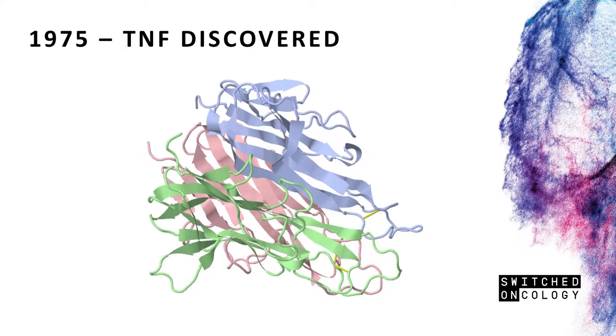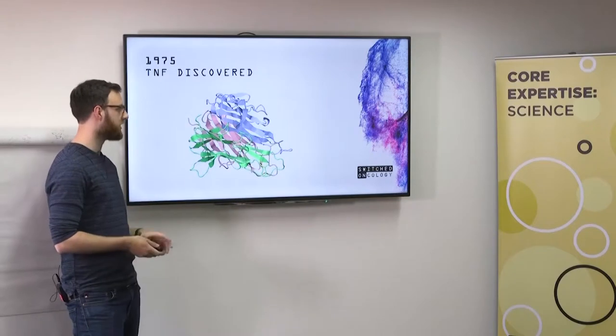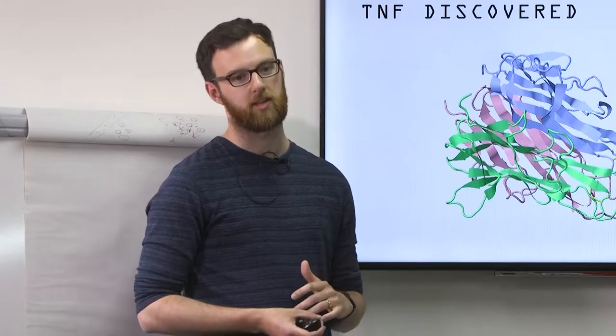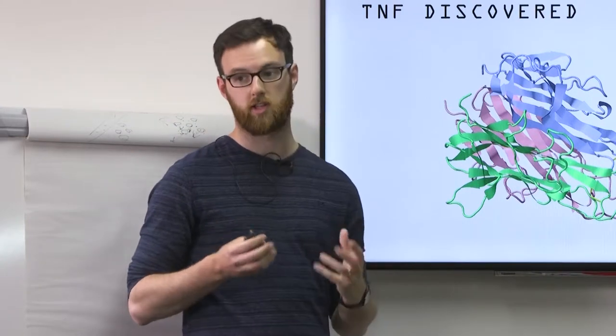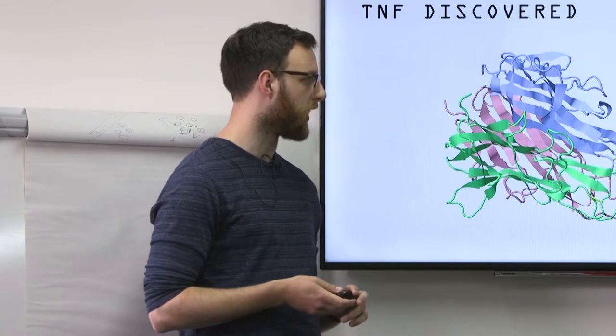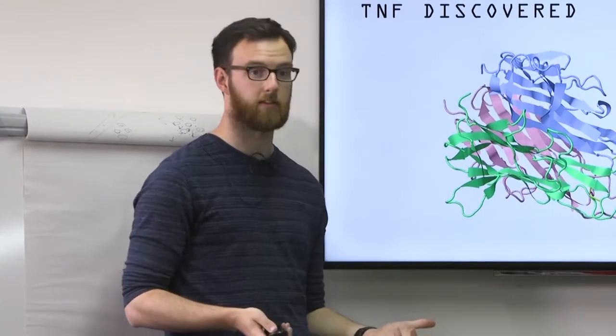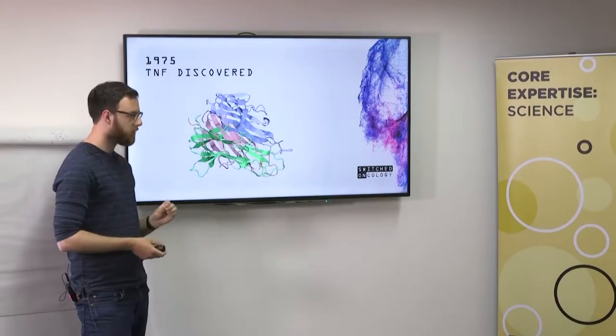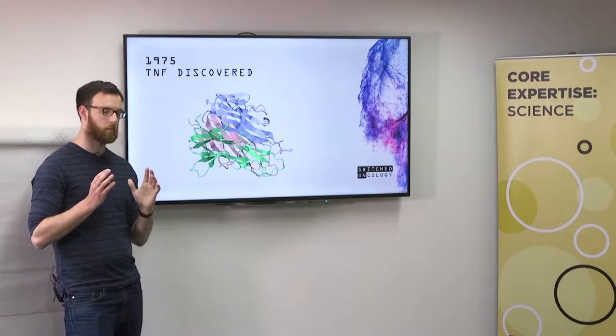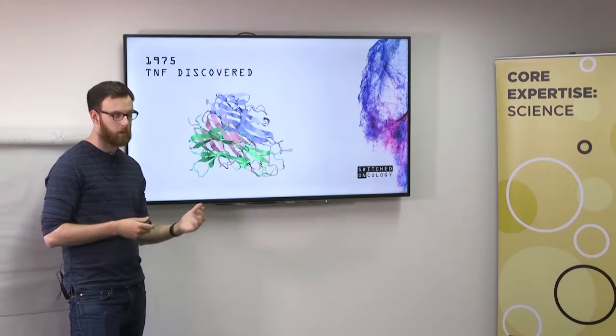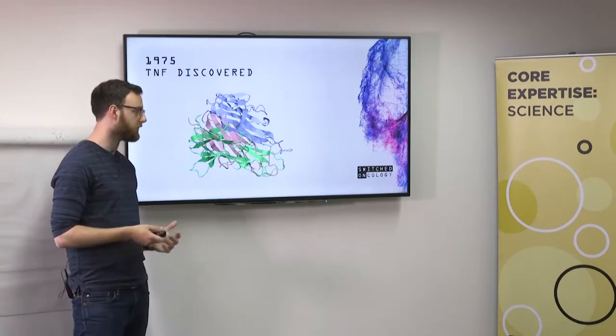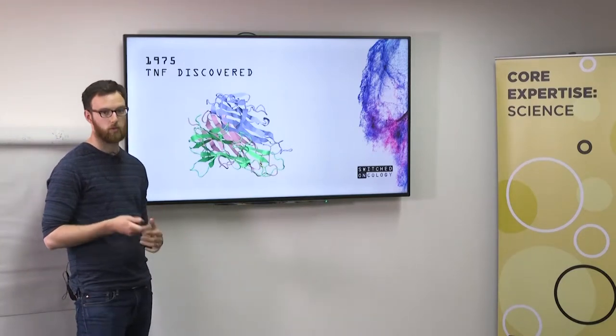1975, TNF, tumor necrosis factor, was discovered. This is its ribbon protein structure. The reason this is important is it was the first naturally occurring substance observed to be able to kill cancer cells. It's an element of the immune system that was able to kill cancer cells. This really sowed the seed for manipulating the immune system to treat cancer. You could argue the discovery of TNF in 1975 sowed the seed for immuno-oncology and immunotherapy.